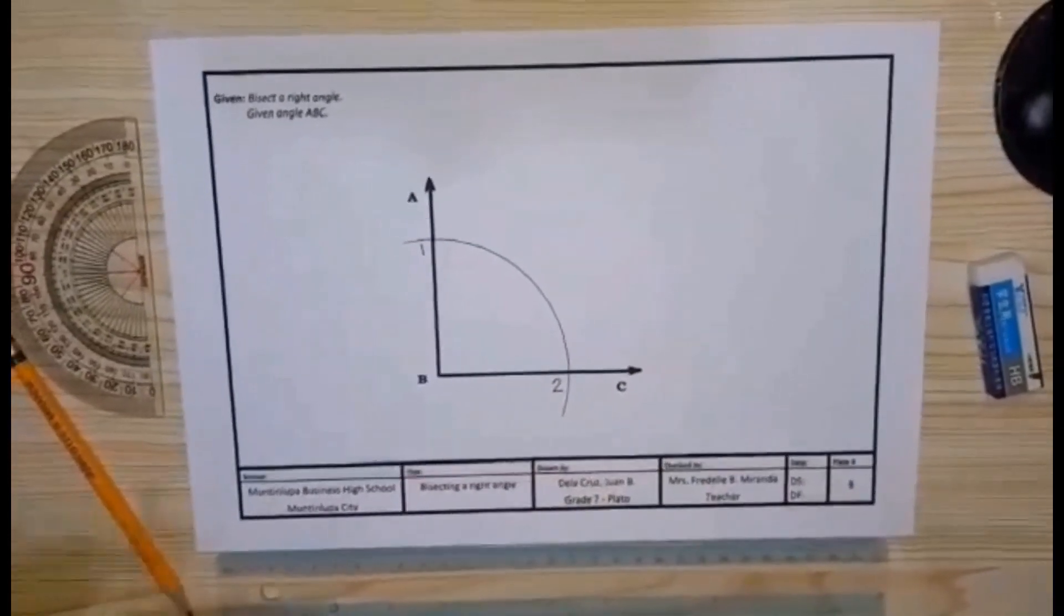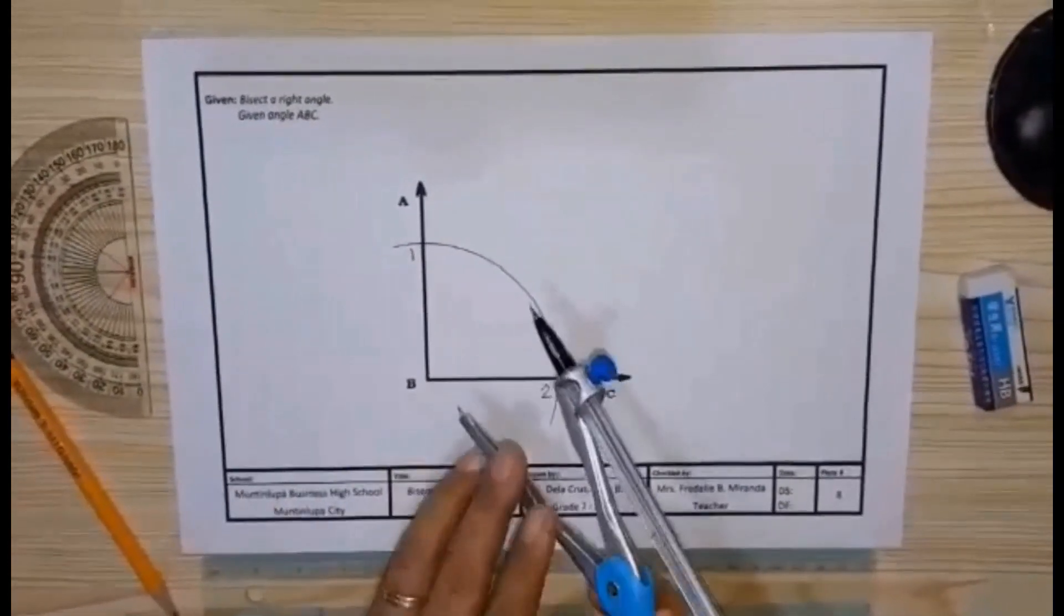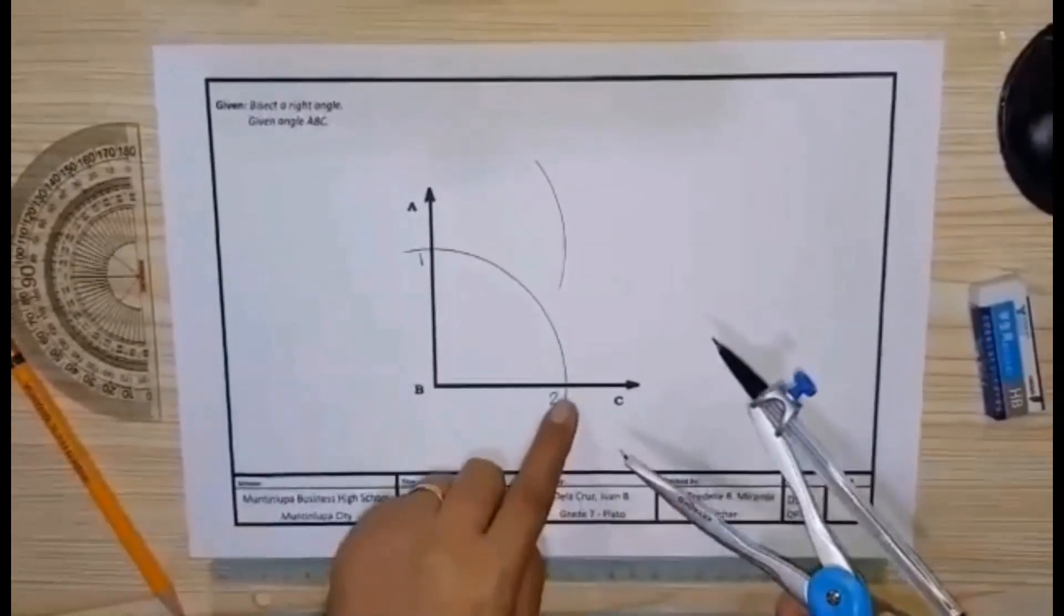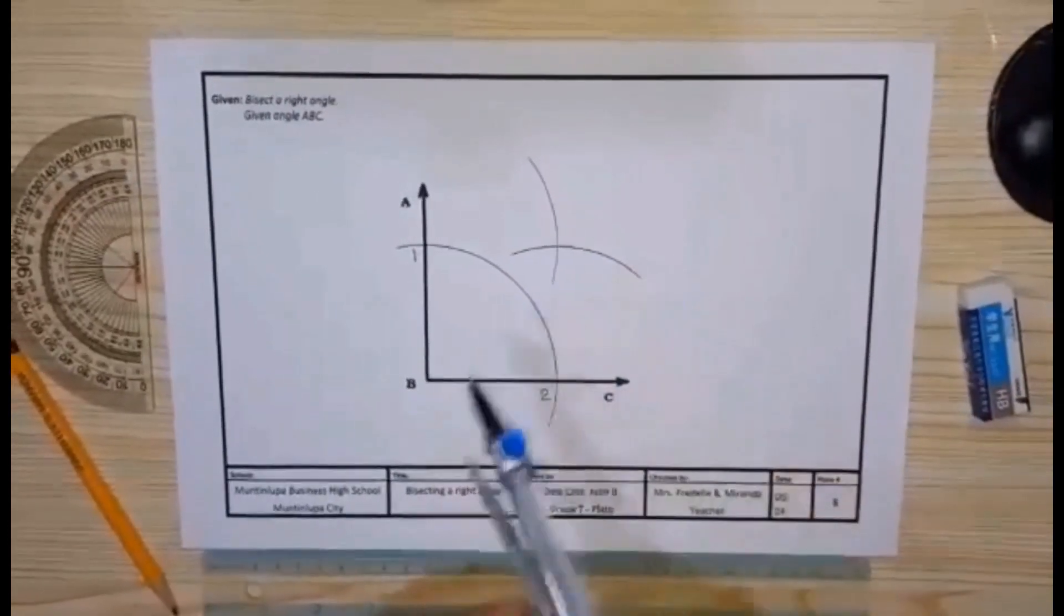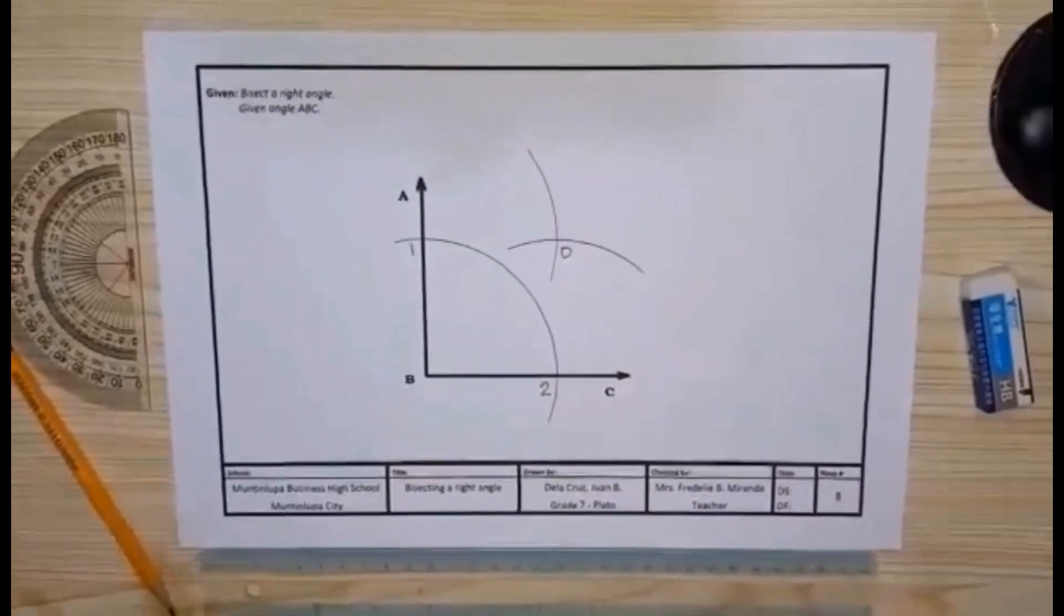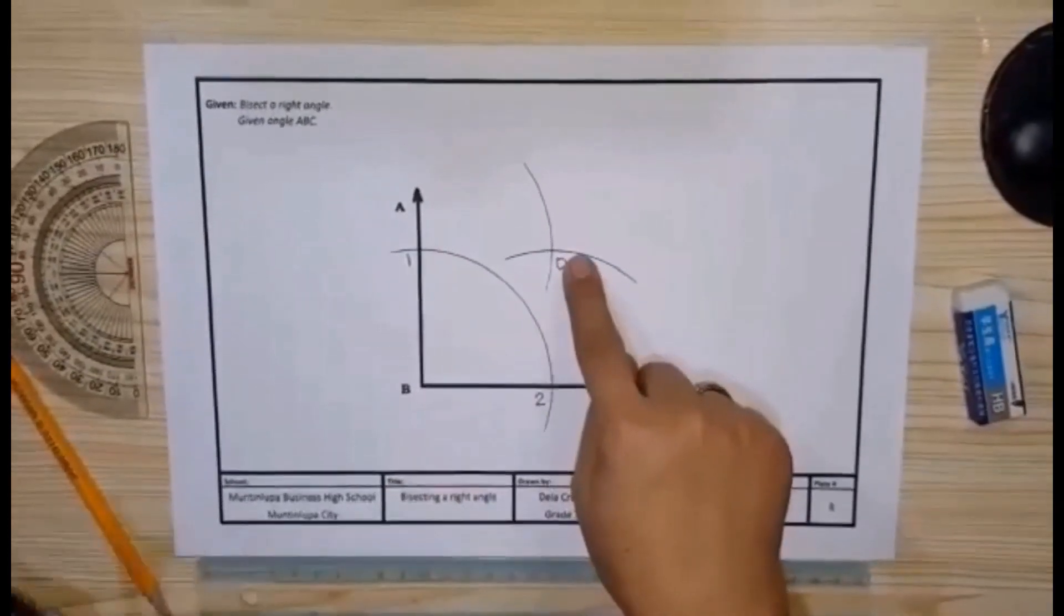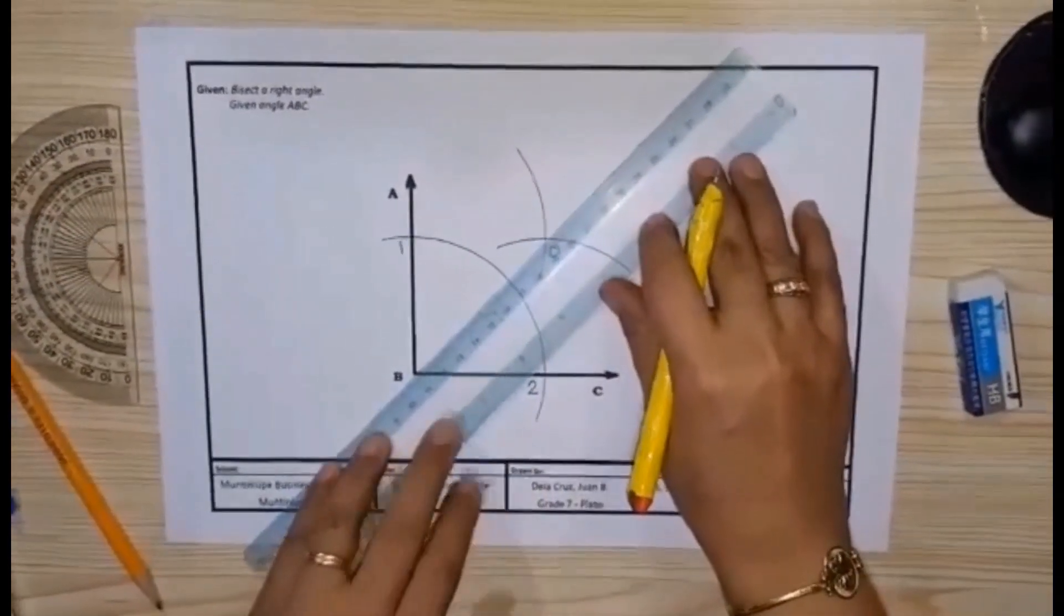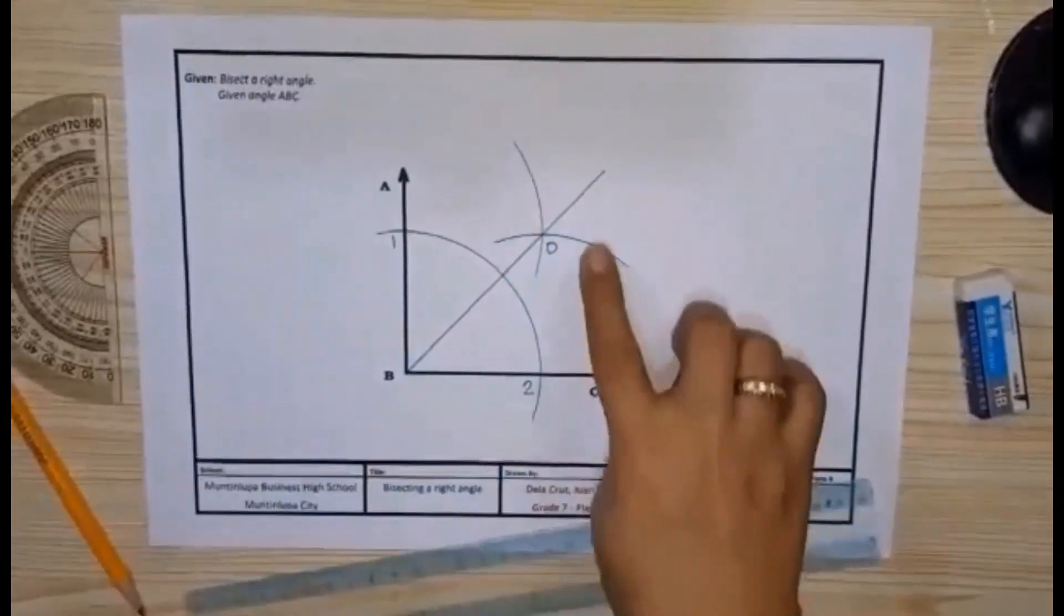Step number two: do not adjust your compass anymore. Set your compass at point 1 then strike an arc. Transfer your compass at point 2 then strike an arc. Intersection of two lines name it point O. Step number three: connect the vertex of an angle B to point O using your foot rule. Connect point B to point O.